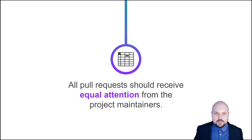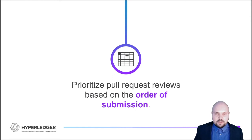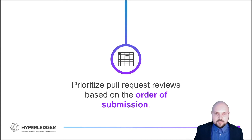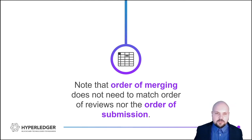Regarding the topic of pull requests, you want to make sure that all pull requests receive equal attention. What this comes down to is that you should prioritize the reviews based on the order of submission, not some other arbitrary criteria such as how well you know the person who submitted the pull request. Also note that the order of merging does not need to match the order of reviews nor the order of submission. There can always be specific technical considerations why a specific pull request can or should be merged in front of another one, so you just have to decide on a case by case basis.